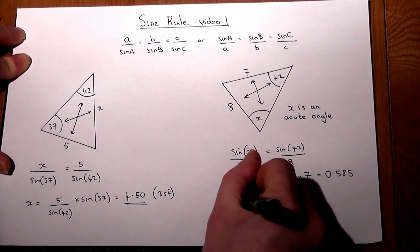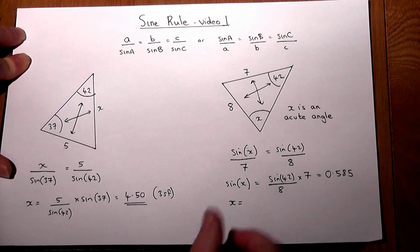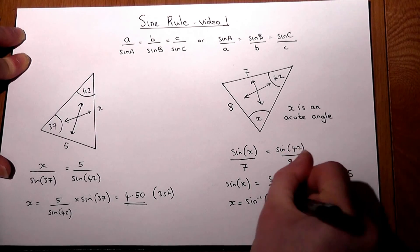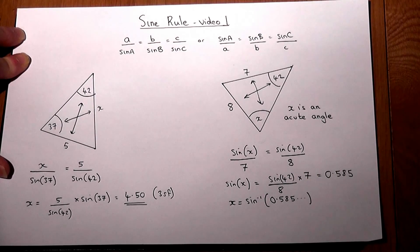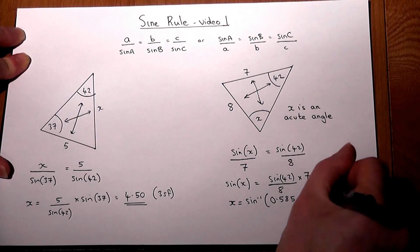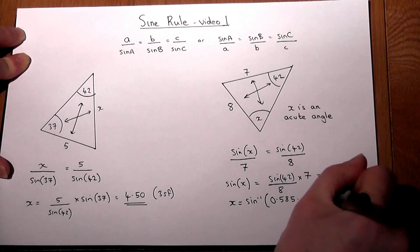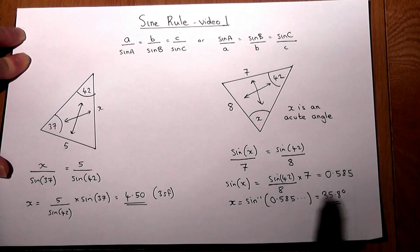Then to find X, we must do the inverse sine. This is the second F or shift sine button on the calculator. Inverse sine of this decimal, if you press enter, you get 35.8 degrees. We're told X is an acute angle, so therefore that is the solution.